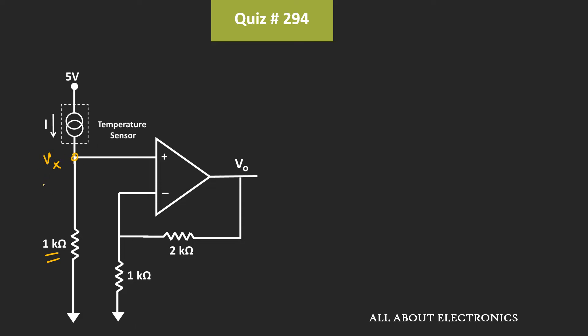Now, here if you observe, this op-amp is configured in the non-inverting configuration. And for the non-inverting configuration, the output voltage Vout can be given as 1 plus Rf divided by R1 times input voltage.